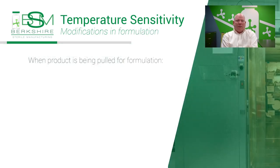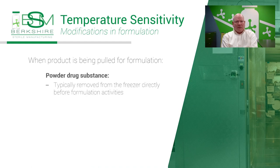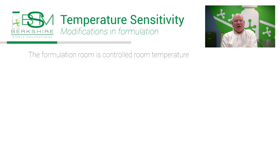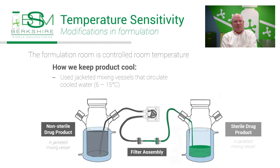When materials are being pulled for formulation activities, the drug substance is removed directly from the freezer if it's a powder. If the drug substance is a frozen solution, it will be thawed in the appropriate temperature-controlled unit for a set duration, all detailed in the batch record — for example, an overnight thaw at 2 to 8 degrees centigrade. All materials are then brought into our formulation room, which is at room temperature, and the product is formulated per the batch record. We can use jacketed mixing vessels to prepare the formulation and to filter into. Cooled water from 6 to 15 degrees C is circulated in the jacketed vessel to control the temperature of the drug product.